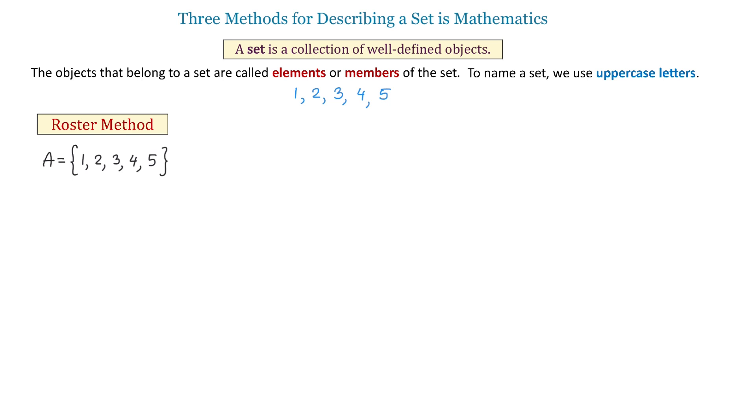The second method is called the set-builder notation. With this method, we don't list the elements. Instead, we describe the elements using a variable. For example, we can use the variable X. So, if we want to describe the same set of numbers 1, 2, 3, 4, and 5 using the set-builder notation,